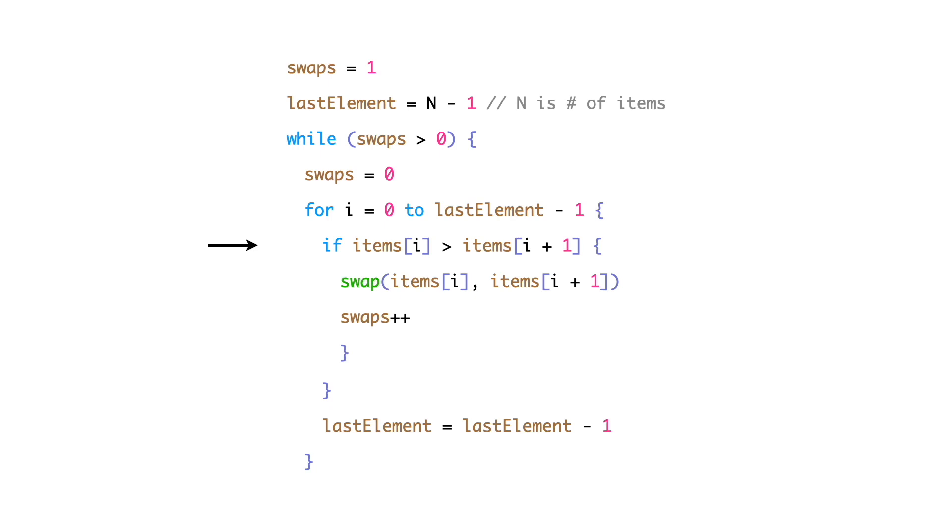For each iteration, we need to compare all the adjacent elements and check whether they are in the correct order. If they are not present in the correct order, perform a swap operation on the elements.